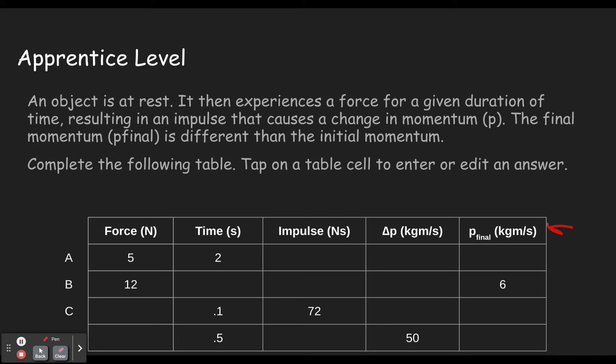This object experiences a force for a given duration of time. So here's force, given duration of time, resulting in an impulse that causes a change in momentum. The final momentum is different than the initial momentum, because there was a change. And then you click and you put in your answers here.